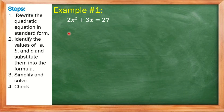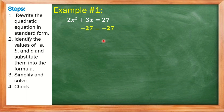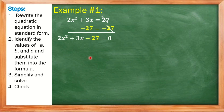Our first example is 2x squared plus 3x equals 27. Step 1: rewrite the quadratic equation in standard form. As you can see, the given equation is not written in standard form, so we have to rewrite it first. To do that, we apply the addition property of equality by adding negative 27 on both sides of the equation. Positive 27 minus 27 equals 0, so we have 2x squared plus 3x minus 27 equals 0.